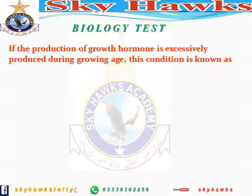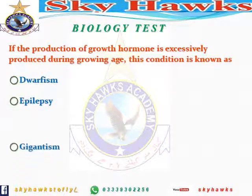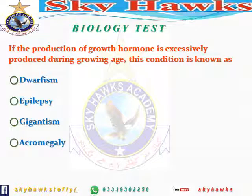Next question: if growth hormone is excessively produced during the growing age, what condition results? Options are: dwarfism, epilepsy, gigantism, or acromegaly. If growth hormone is excessive, we grow more than normal. The correct answer is gigantism.